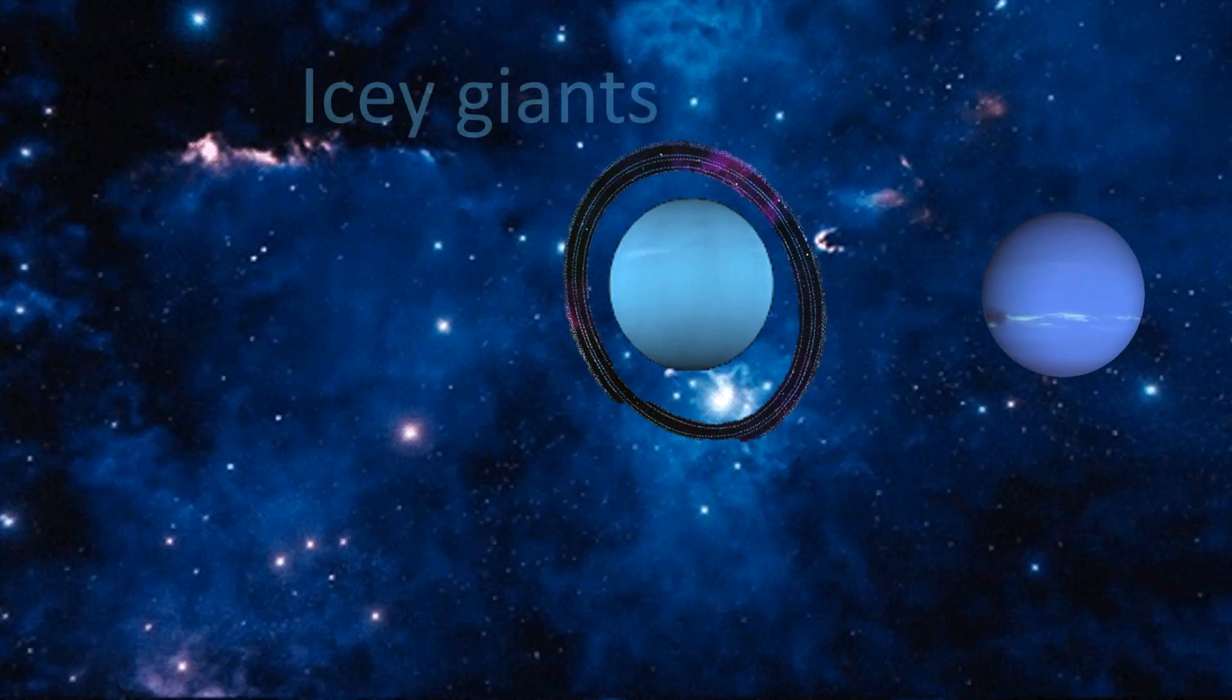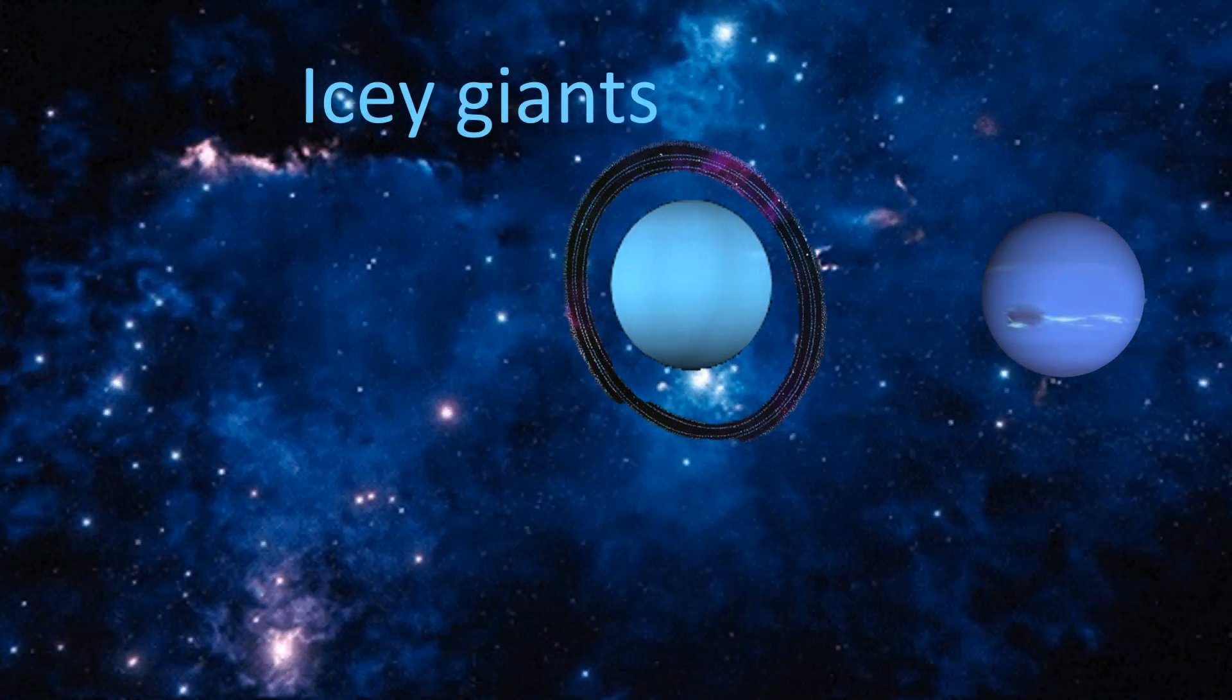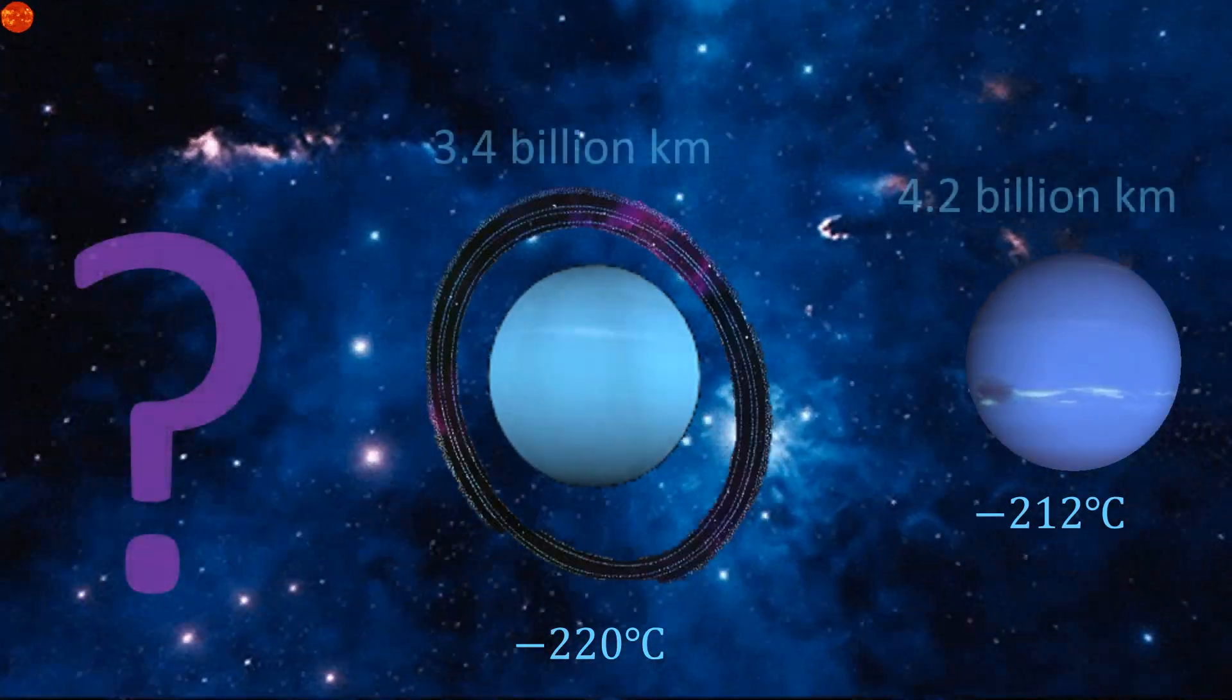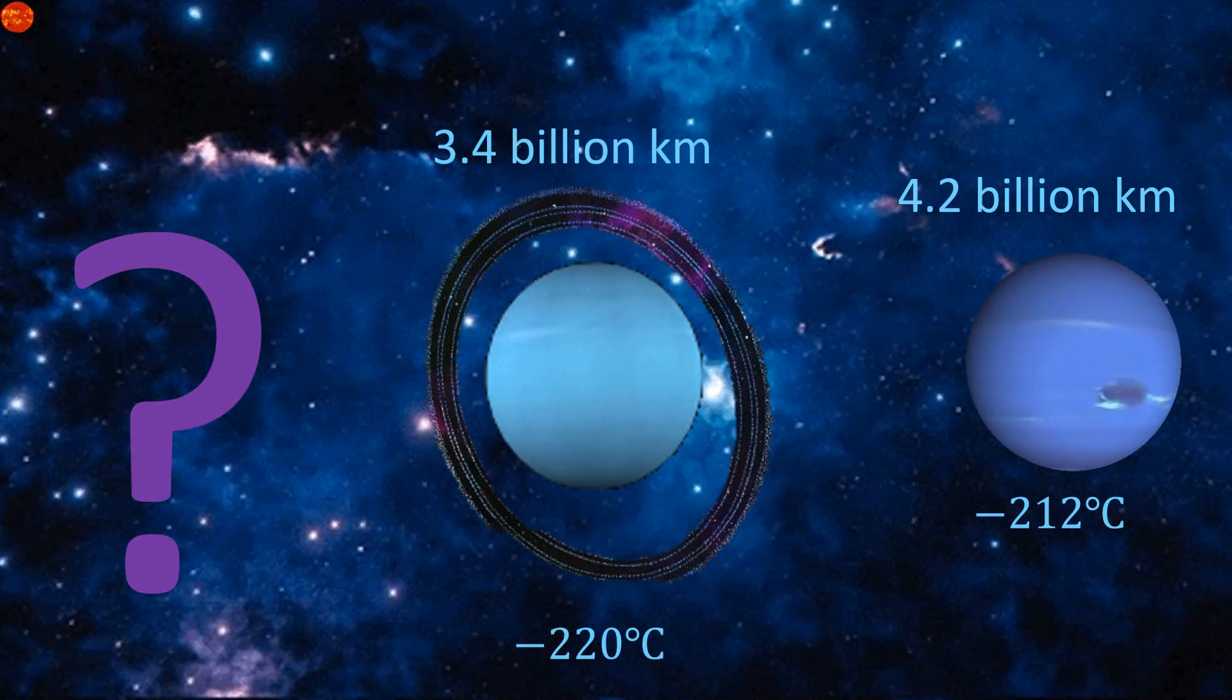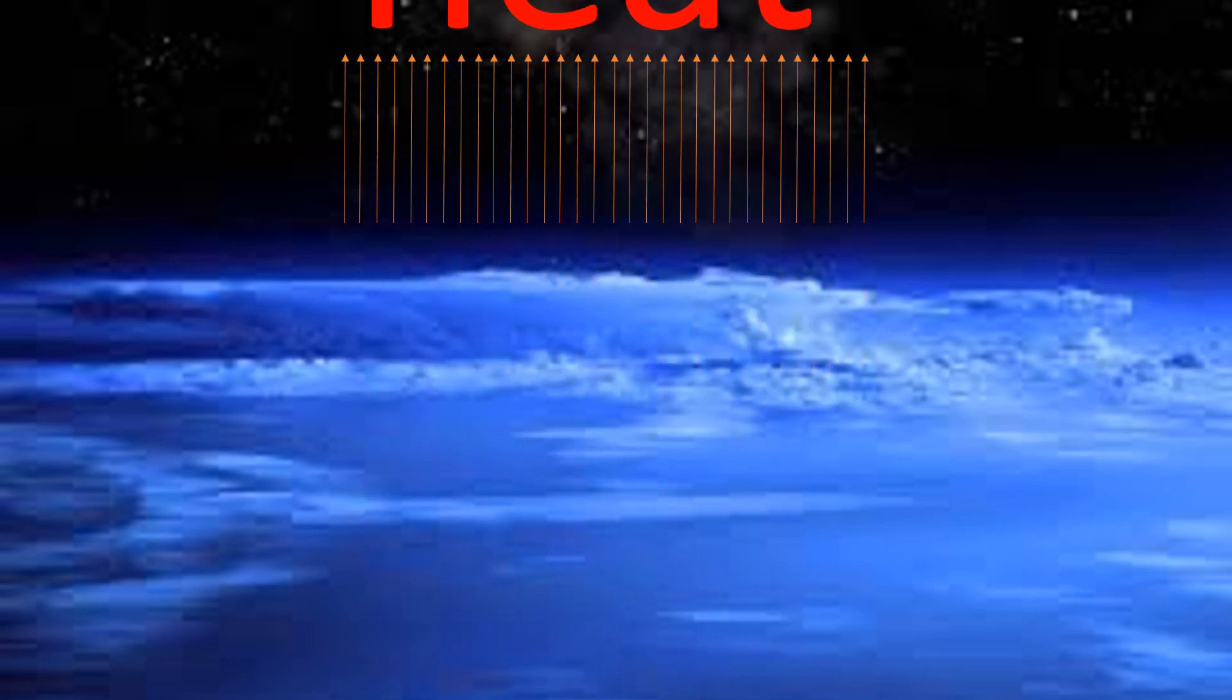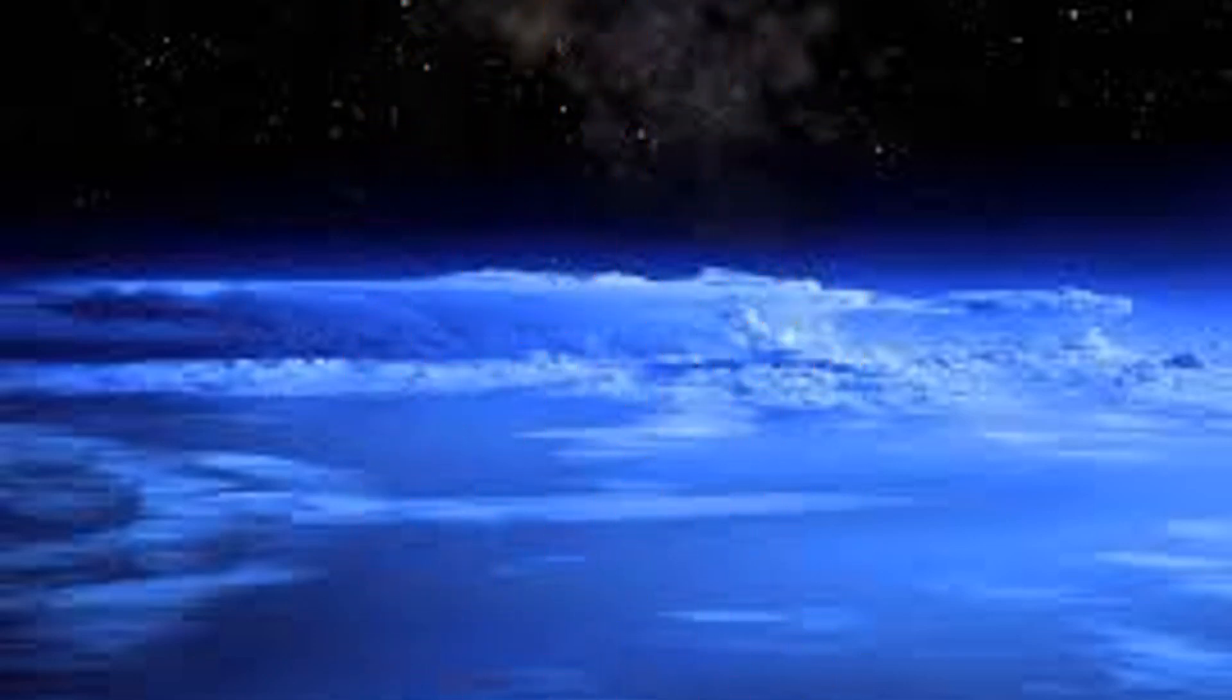Uranus is an icy giant like Neptune. Although Uranus is closer to the sun than Neptune, Neptune is hotter than Uranus. Why? Scientists still don't know why Neptune is hotter than Uranus, but they think Neptune has a special atmosphere that brings heat from the core.